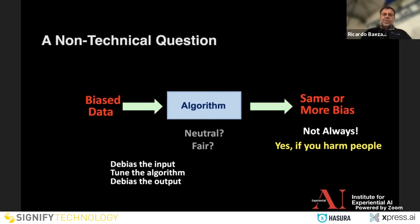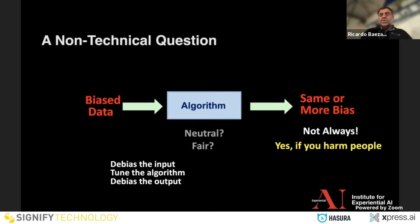How do you handle this problem? The easiest and best solution would be to debias the input, but sometimes we don't know the bias or don't know the right reference value. Another possibility is to tune the algorithm — there are techniques like learning to rank with bias that learn to handle specific biases, but you need to know the bias, you can't do it in general. Finally, you can debias the output, but then you've already lost a lot of information and the solution will be partial.